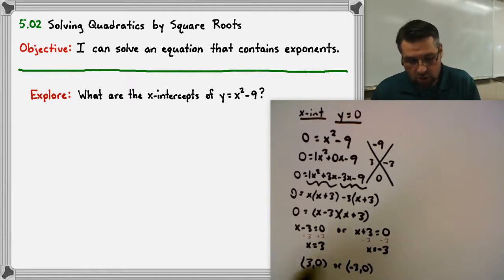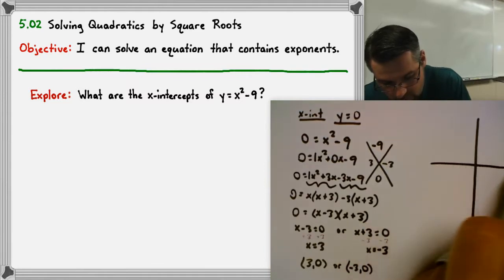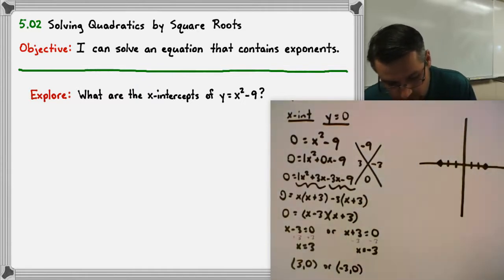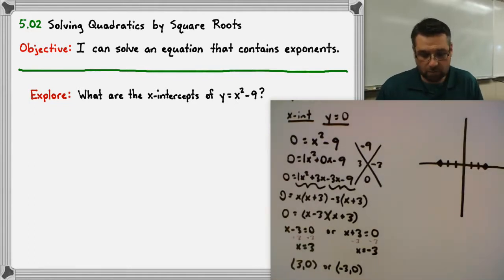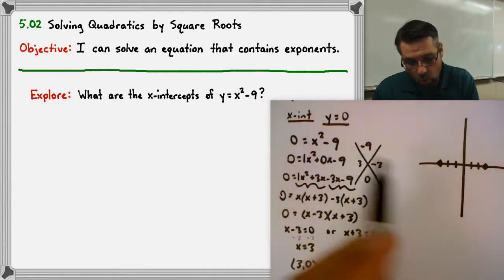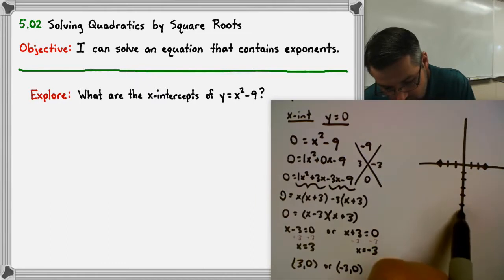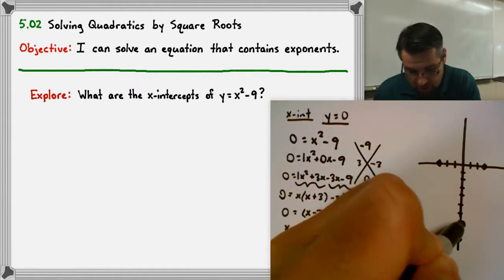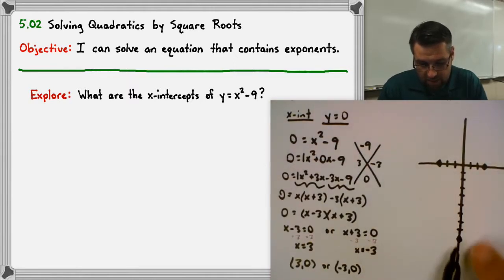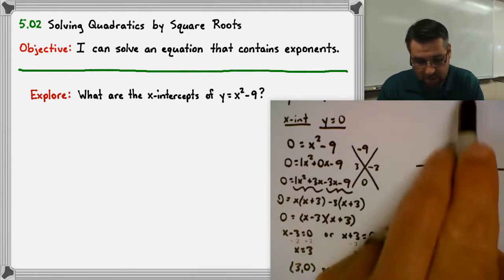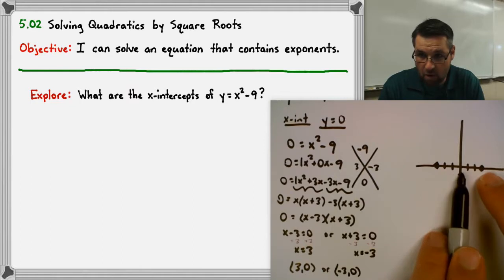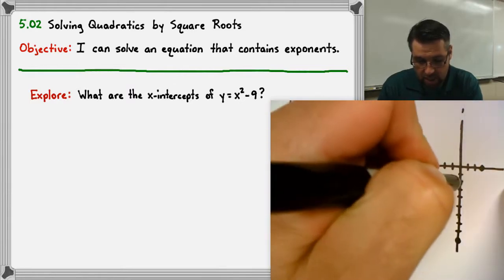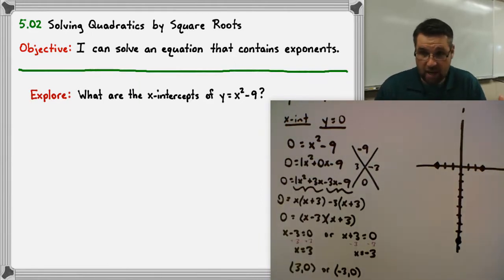We found our x-intercepts: three comma zero and negative three comma zero. Graphing this parabola, we go right three for one x-intercept and left three for the other. Since the c value is negative nine, the y-intercept is zero comma negative nine. Notice this point is our vertex because the axis of symmetry lies exactly in the middle of all reflected points — since each intercept is three units from zero, the axis of symmetry is the y-axis.